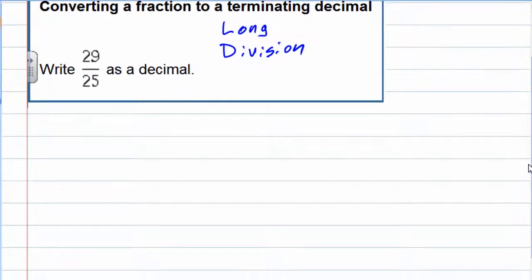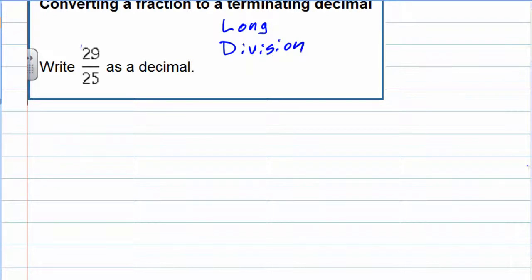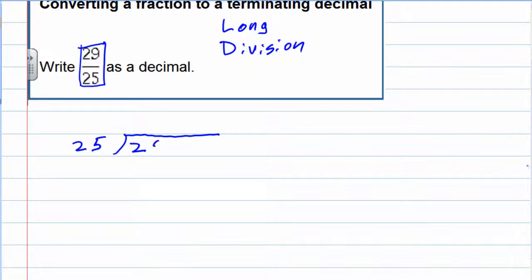Keep in mind that the fraction 29/25 is 29 divided by 25. So when we set it up for long division, the 25 is going to be the first number on the outside, and the 29 is underneath. It's a very common mistake to put those in the wrong order when we switch from a fraction to a decimal. But 25 goes into 29 — we can do that with long division.